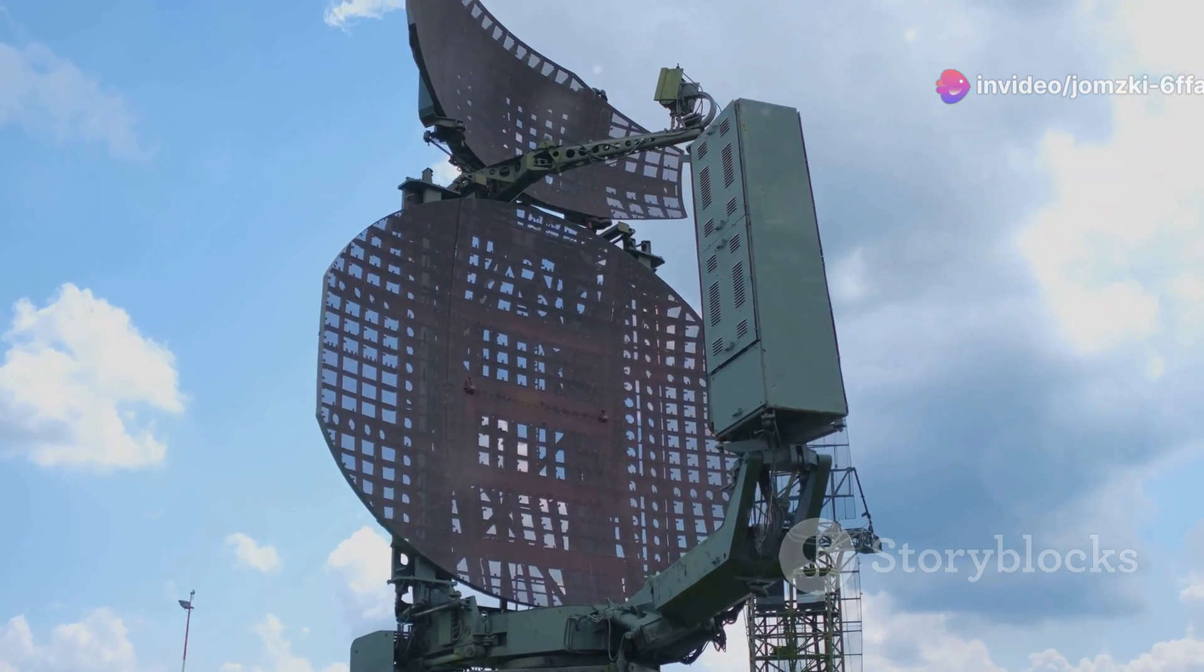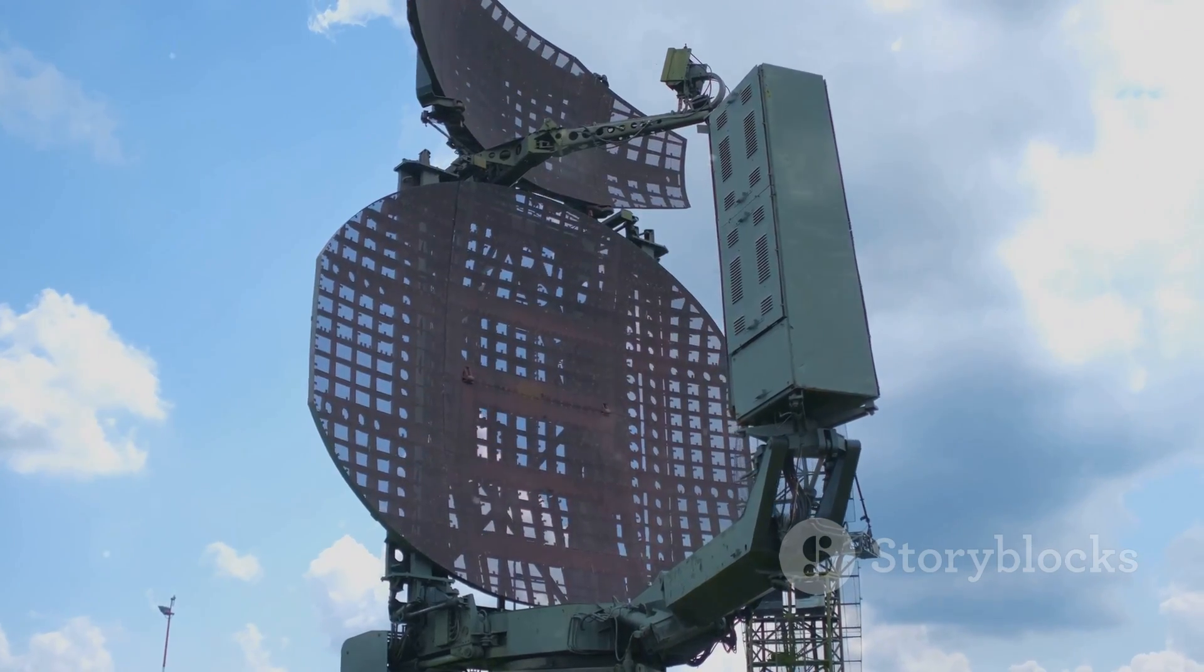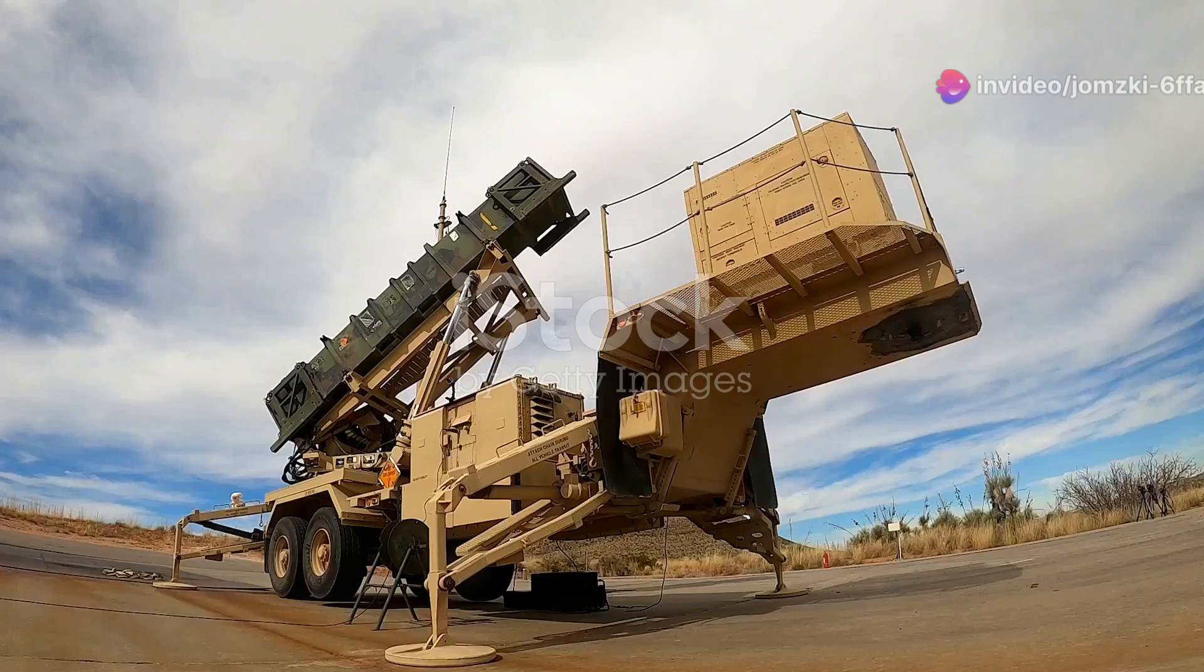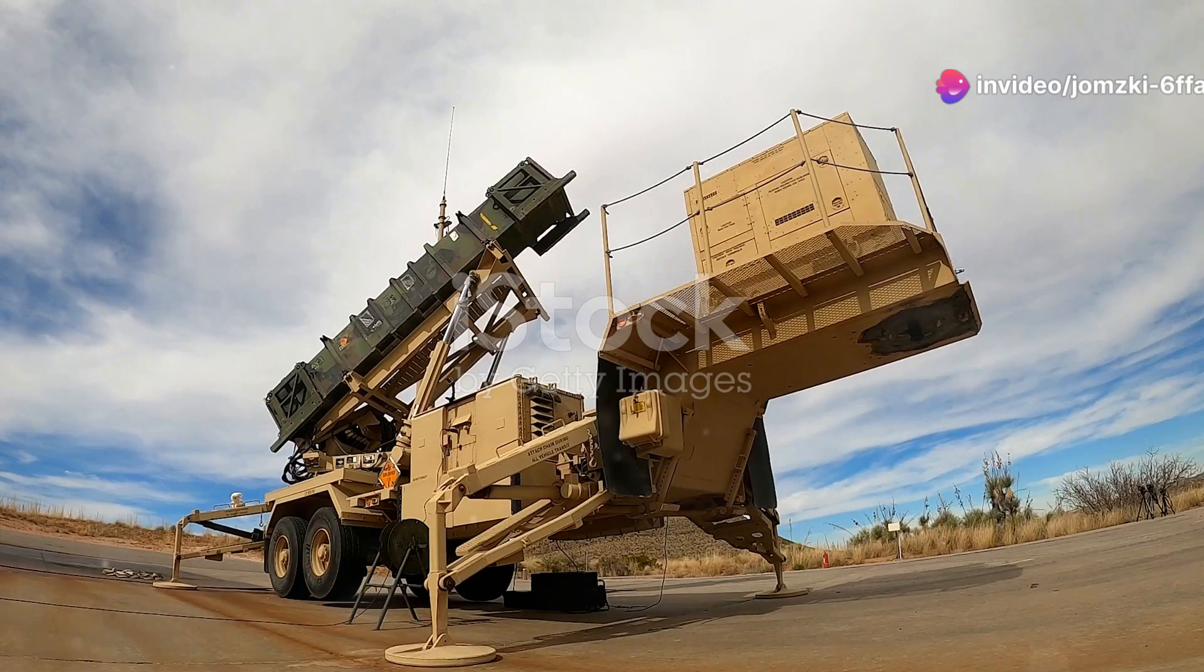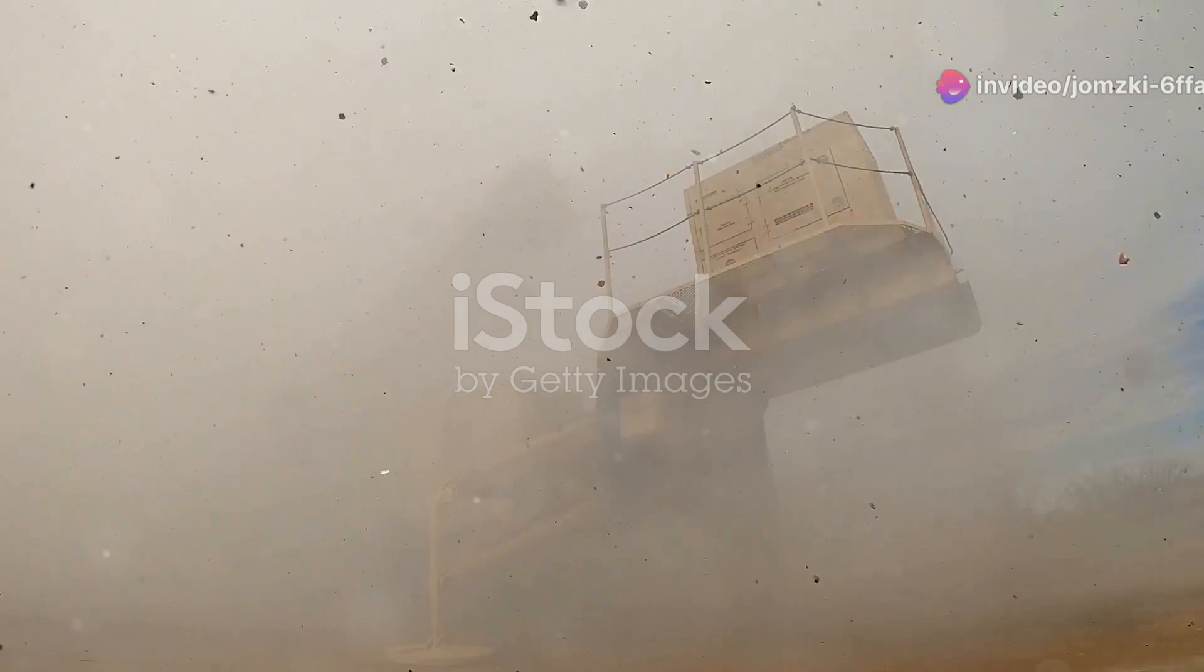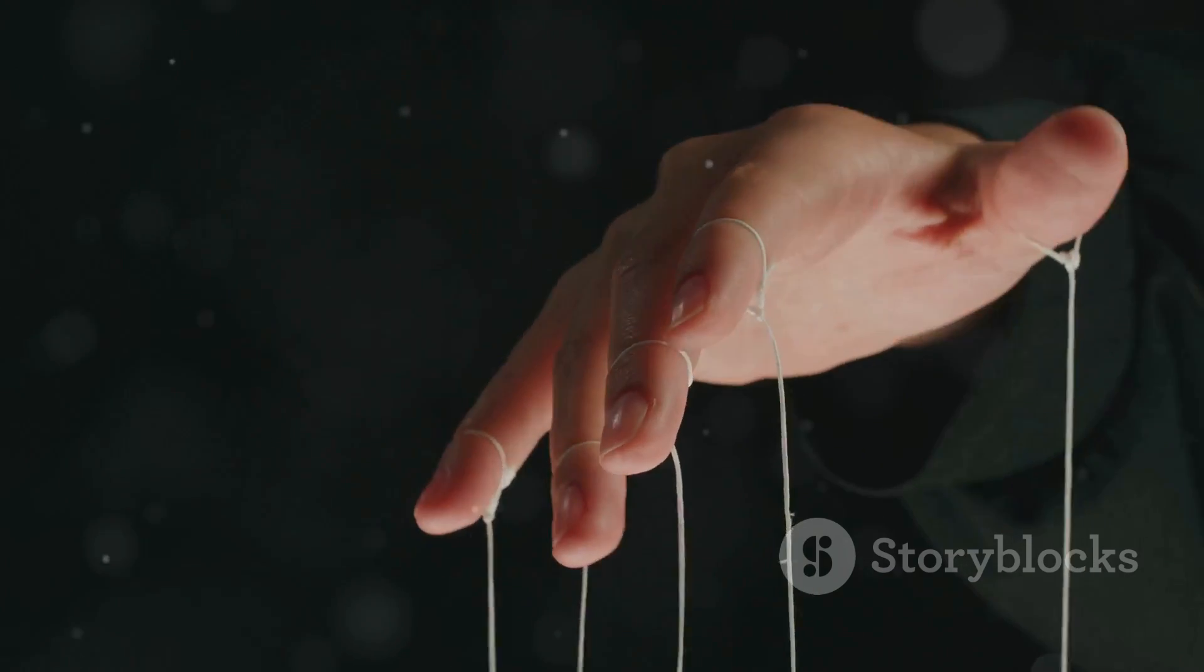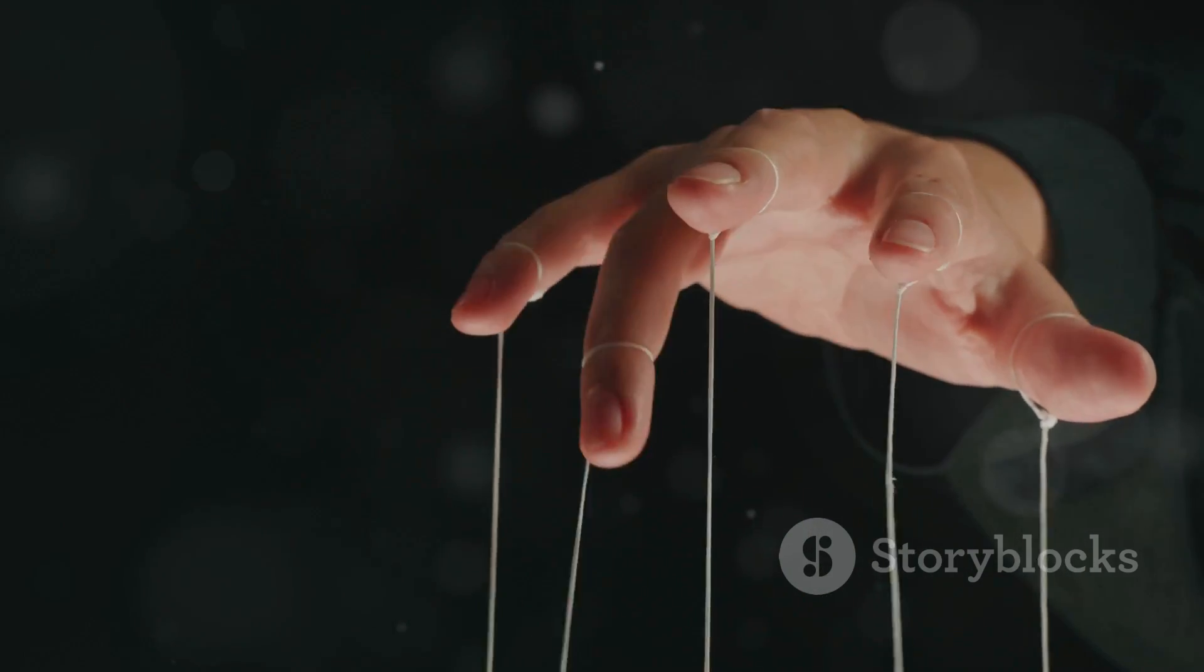Command Guidance relies on a ground-based tracking system that continuously monitors both the target and the missile's position. As the missile travels towards its target, the ground station sends commands to the missile, adjusting its course to ensure a successful interception. Think of it like a puppeteer pulling the strings, guiding the missile along its designated path.